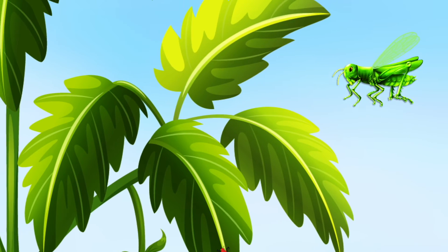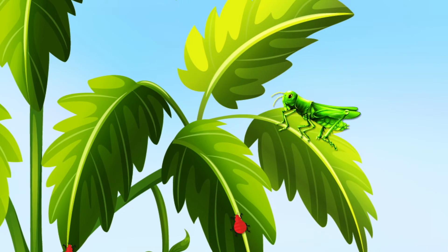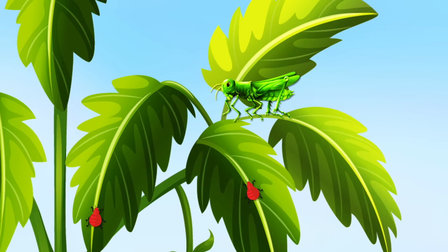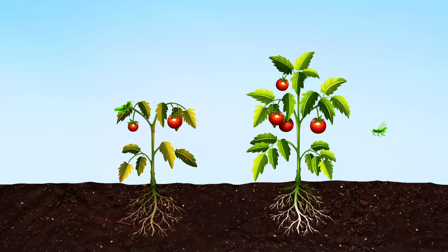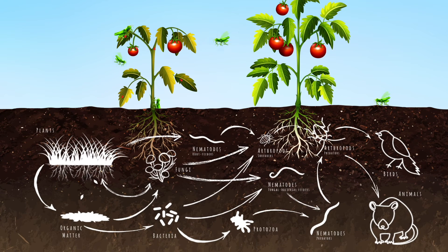Insect pests can also be a problem for farmers. These are much larger than the disease-causing microorganisms we just looked at. But real-world trials have shown that with a balanced soil food web in place, insect pests are deterred from attacking the healthy plants that are grown.